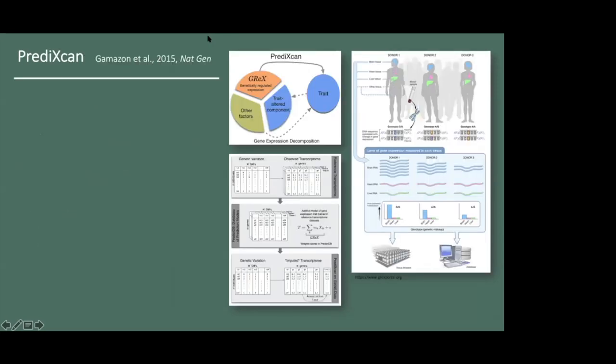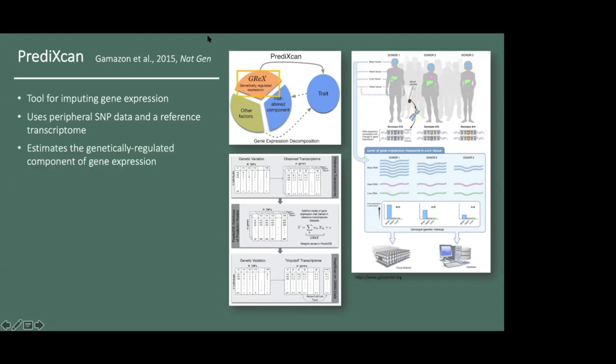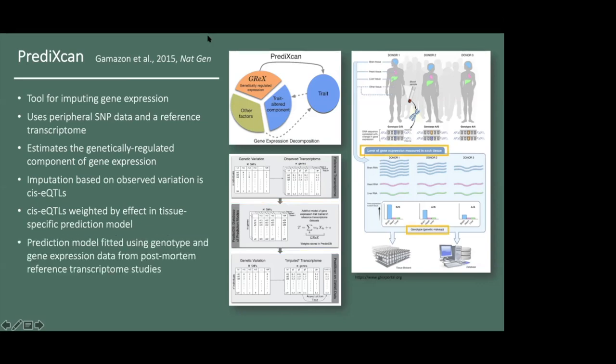In order to compute TPRS, we need to be able to impute cortical gene expression. PrediXcan is a tool that allows us to do this. It uses peripheral SNP data and a reference transcriptome to estimate the component of gene expression that is genetically regulated. Imputation is based on observed variation in cis-eQTLs, and the relative contribution of each cis-eQTL is determined based on its weighting in a tissue-specific prediction model, which is fitted using genotype and gene expression data from reference transcriptome studies.